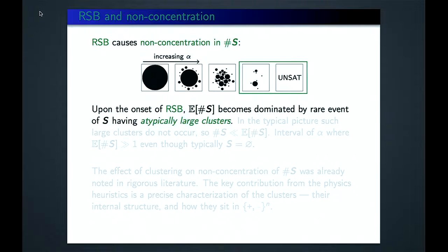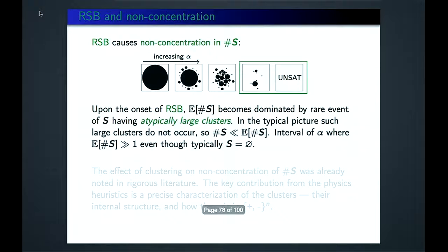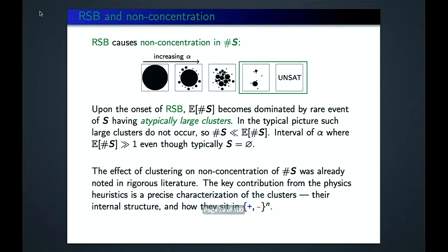The RSB causes non-concentration in the number of solutions. At the onset of 1RSB, the expected number of solutions becomes dominated by the rare event of S having atypically large clusters. A large cluster gives a contribution to the expected value growing like 2^(number of free variables) — exponential — while the probability of this event decreases only sub-exponentially. So the expected value is much larger than the typical value, and you predict the answer completely wrong.